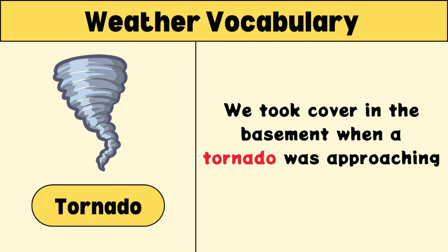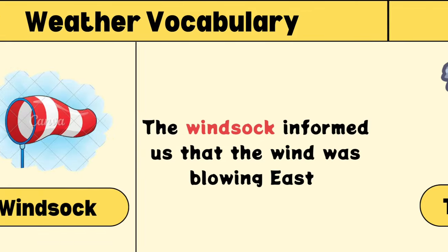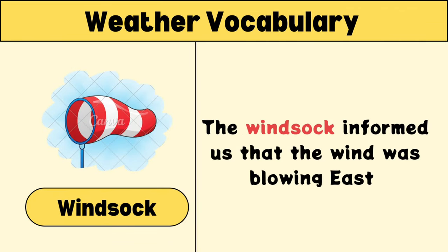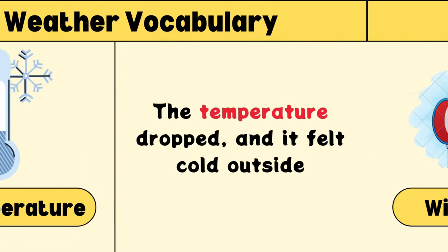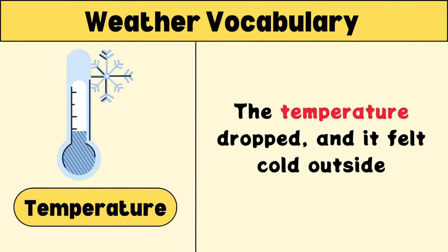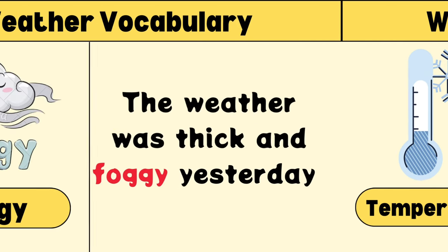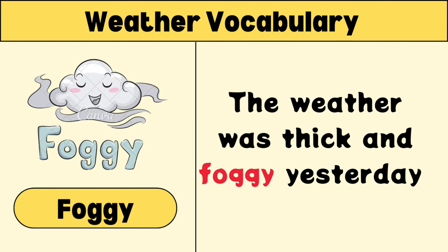Tornado: we took cover in the basement when a tornado was approaching. Windsock: the windsock informed us that the wind was blowing east. Temperature: the temperature dropped and it felt cold outside. Foggy: the weather was thick and foggy yesterday.